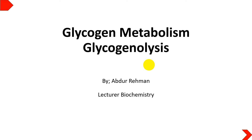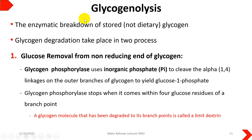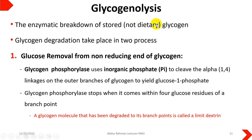Today's topic is glycogenolysis, which comes under glycogen metabolism. In the previous lecture we discussed glycogenesis, a four-step process. Glycogenolysis is the breakdown of the stored form of glycogen present in our liver and muscles. We are not talking about dietary glycogen breakdown, but rather the breakdown of glycogen stored in the liver and muscles.